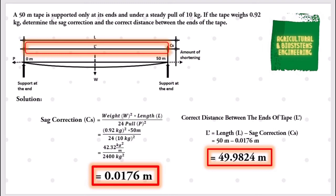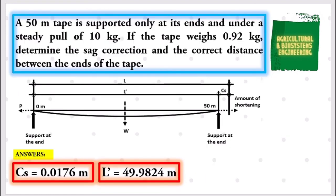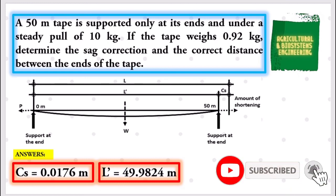Take note that when solving for the correction due to sag, there will always be a shortening of the tape. In summary, the sag correction is 0.0176 meters and the correct length between end supports is 49.9824 meters. If you wish to see more tutorials regarding surveying, visit the description box, and please do not forget to subscribe before you exit.